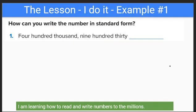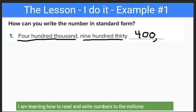In your workbook it says: how can you write the number in standard form? Let's look at it. It's four hundred thousand, nine hundred thirty. Notice that there's a comma right here, and it's the same as that comma right there. We read this as four hundred thousand nine hundred thirty.